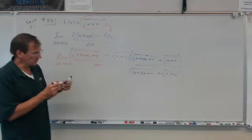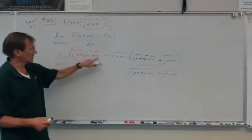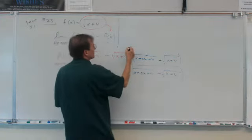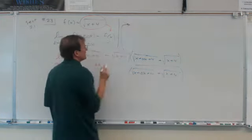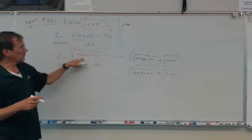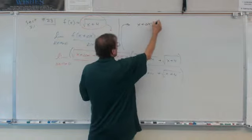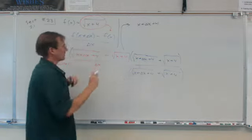And of course multiplying conjugates, it's going to be real easy. Let's write it up here. So I'm going to take the answer and put it up here. So the radicals go away and I'm going to get x plus delta x plus 4. So that's the first radicals.